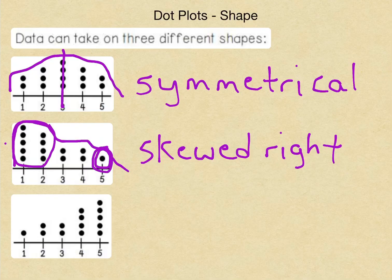Because this data point over here, this five, because it's not in with most of the points, it is pulling or skewing that data to the right. It has this little tail at the end.